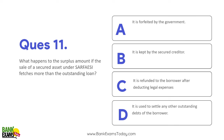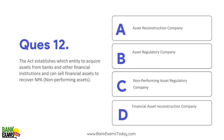What happens to the surplus amount if the sale of a secured asset under SARFAESI fetches more than the outstanding amount? The rest of the amount is refunded to the borrower after deducting legal expenses. The act also enables Asset Reconstruction Companies to acquire assets from banks and other financial institutions and sell financial assets to recover NPAs. ARCs purchase loans from banks, bundle them, securitize them, and sell the bundled loans.